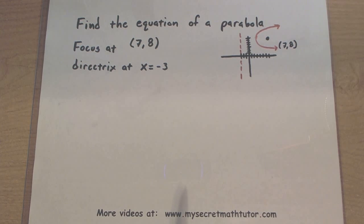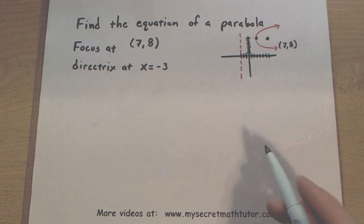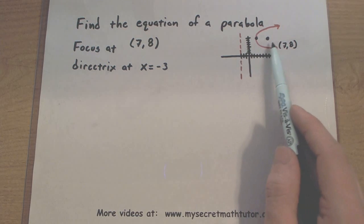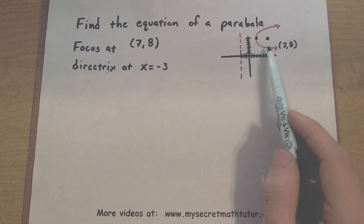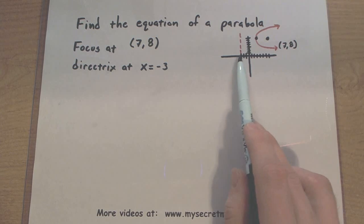Now this also helps me determine one more thing. This will help me determine the location of that vertex. And it should be halfway between the directrix and the focus. So let's see. The focus has an x value of 7. The directrix is at negative 3.